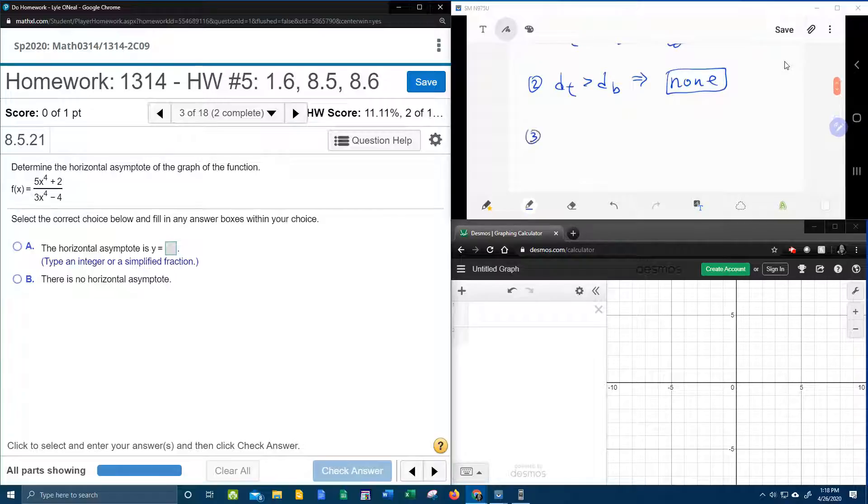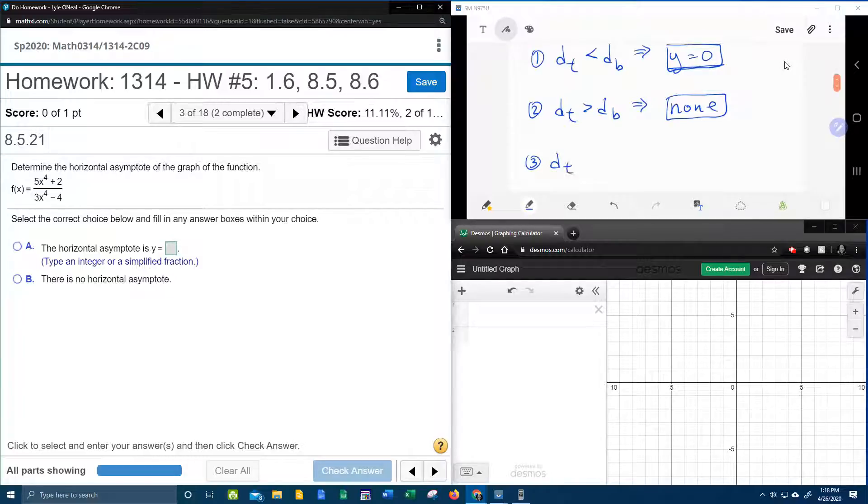And scenario number three, which is our scenario, if the degree of the top equals the degree of the bottom, then we will have a horizontal asymptote. It's going to be y equals a over b.